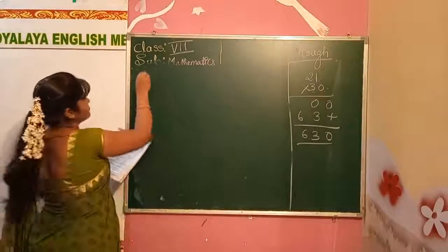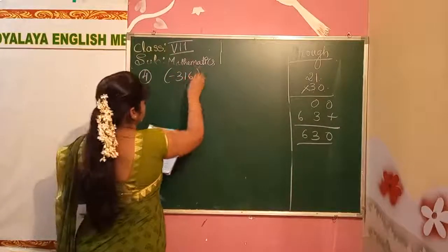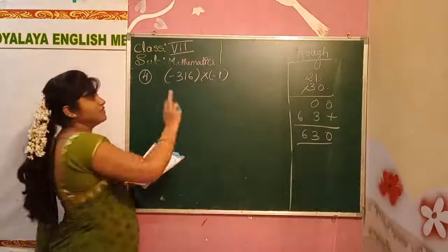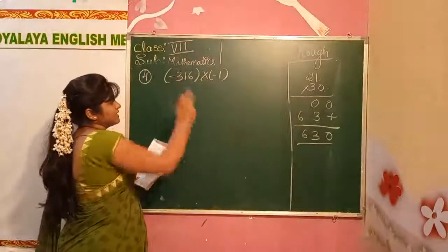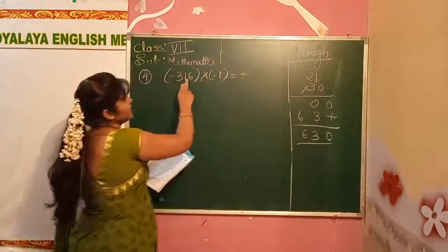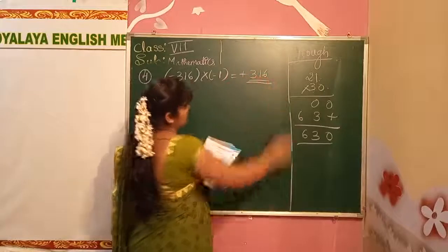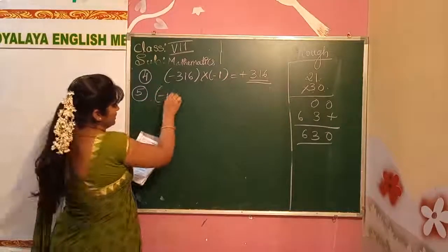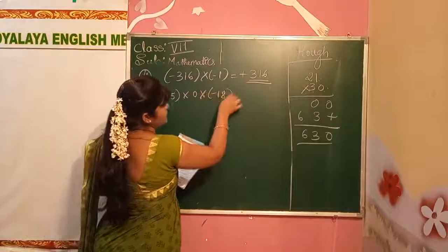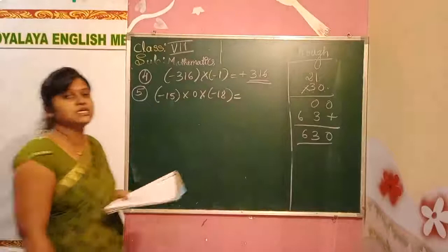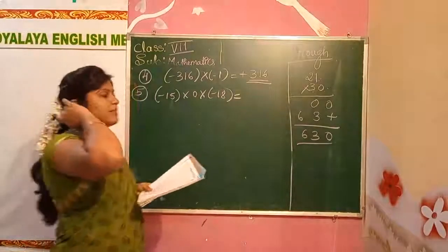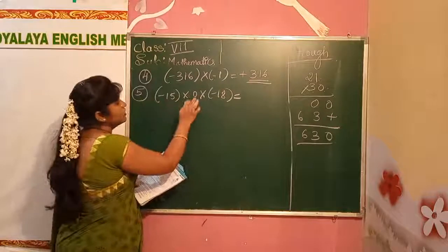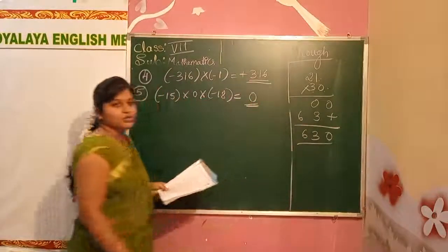Fourth question: minus 316 into minus 1. This is the identity property again — 1 is the identity. They are giving the sign, so we take it: minus into minus gives plus. 316 into 1 gives 316 itself. Fifth question: minus 15 into 0 into minus 18. This is the multiplication property of 0 — when we multiply any number with 0, we get 0 itself. So the answer is 0.